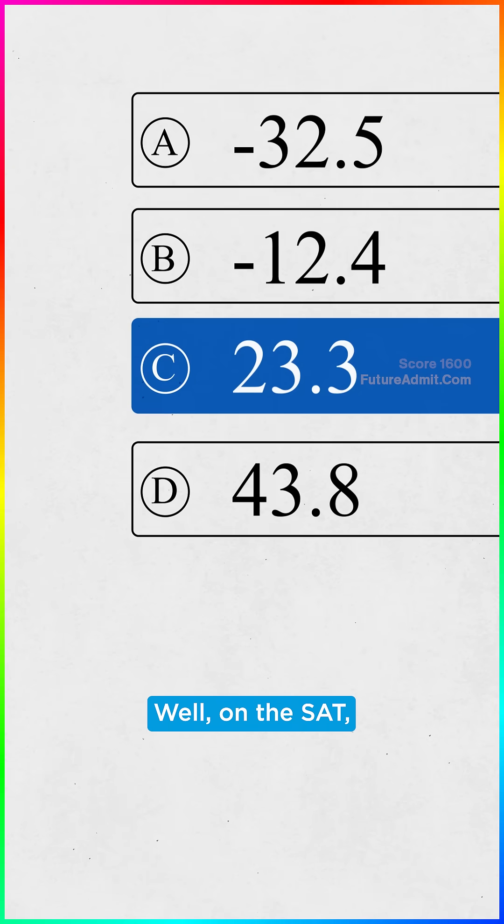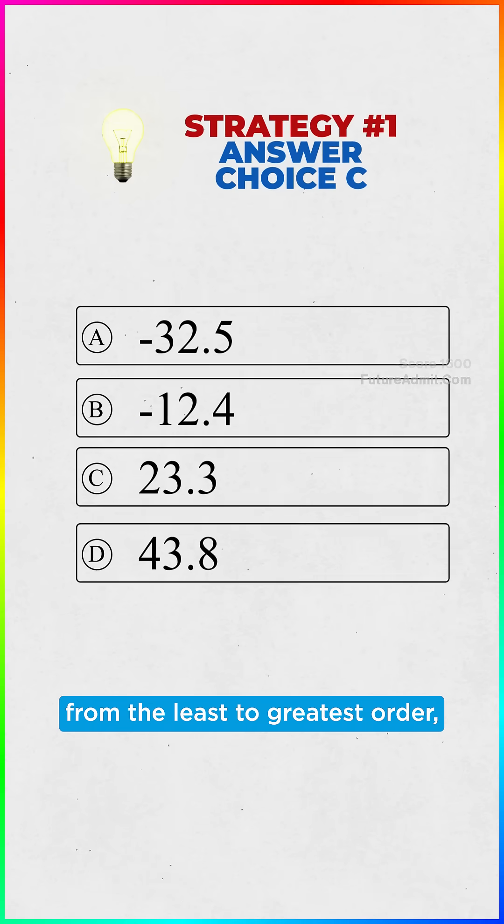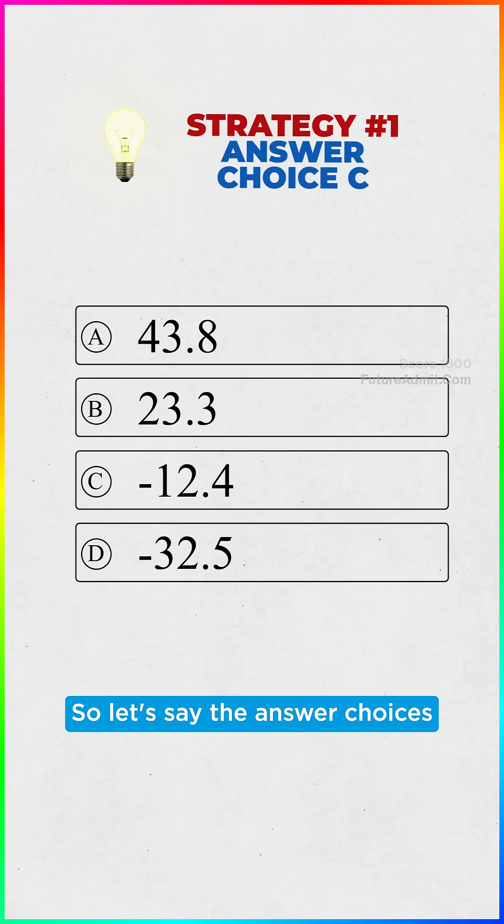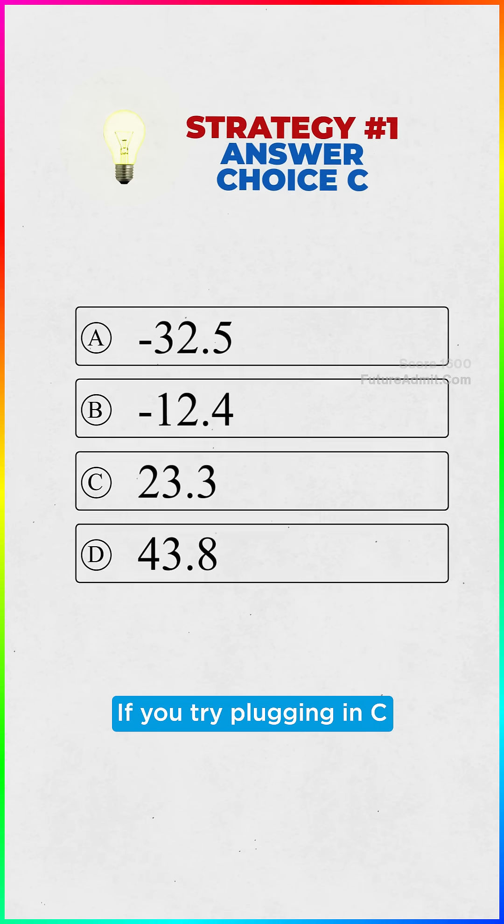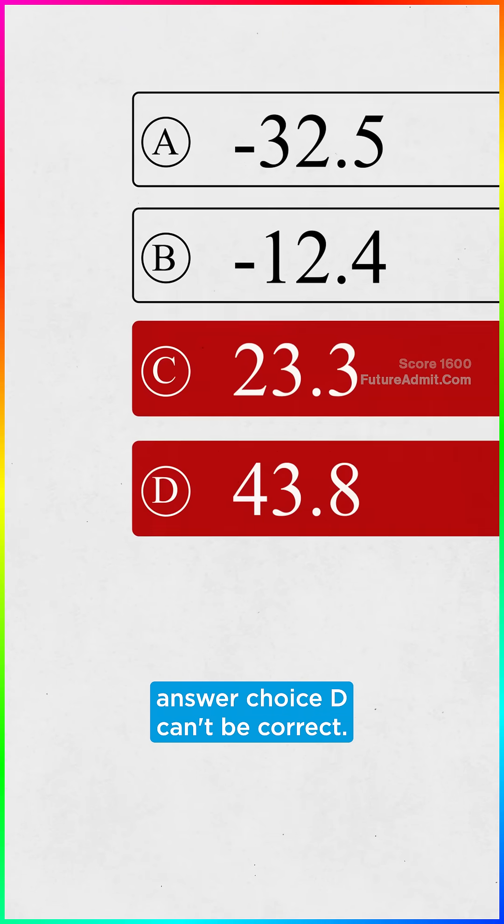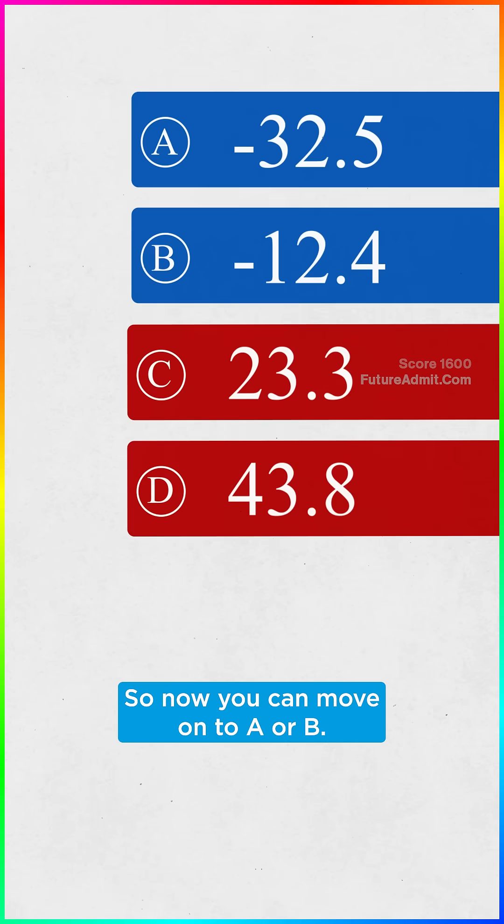Why? Well, on the SAT, answers are typically ordered from least to greatest order, or sometimes greatest to least order. So let's say the answer choices are listed in least to greatest order. If you try plugging in C and it's too big, you know answer choice D can't be correct. So now you can move on to A or B.